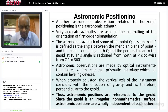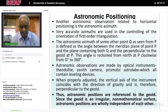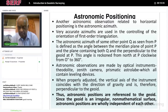Observations are made with optical instruments. These instruments contain leveling devices because they have to be kept horizontal, and a spirit level is used to ensure they are level. When properly adjusted, the vertical axis of the instrument coincides with the direction of gravity and is therefore perpendicular to the geoid. So all horizontal measurements are done with respect to the perpendicular to the geoid — that is, the local vertical. Thus, astronomical positions are referred to the geoid, and since the geoid is an irregular, non-mathematical surface, astronomical positions are wholly independent of each other.